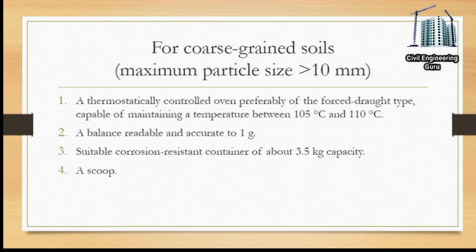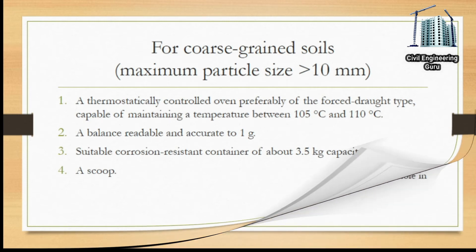Apparatus for coarse grained soils: a thermostatically controlled oven, preferably of the forced draft type, capable of maintaining a temperature between 105°C and 110°C; a balance readable and accurate to 1 gram; a suitable corrosion-resistant container of about 3.5 kilograms capacity; and a scoop.